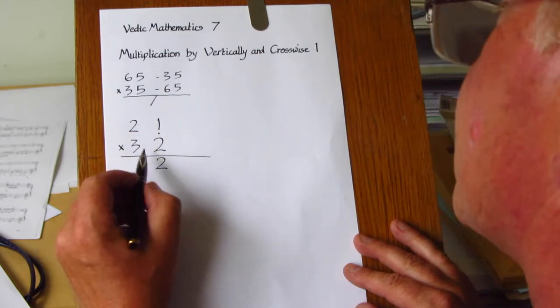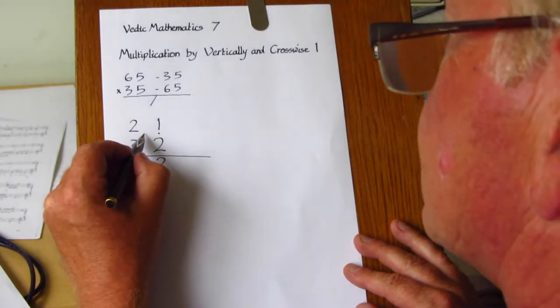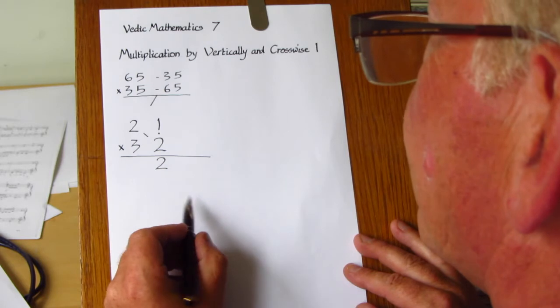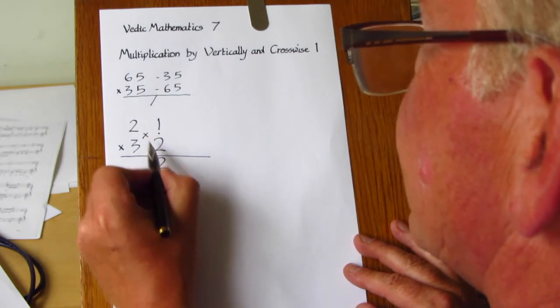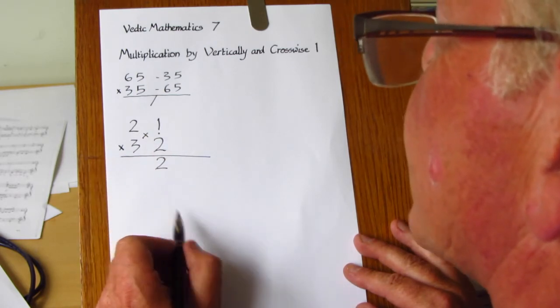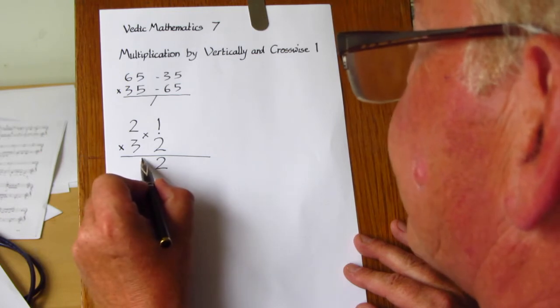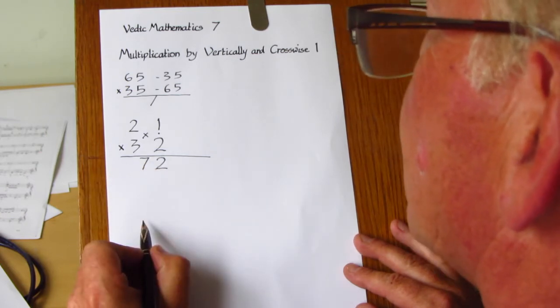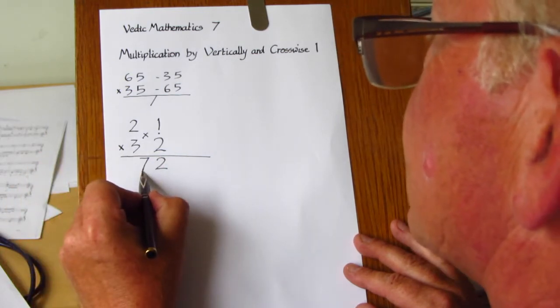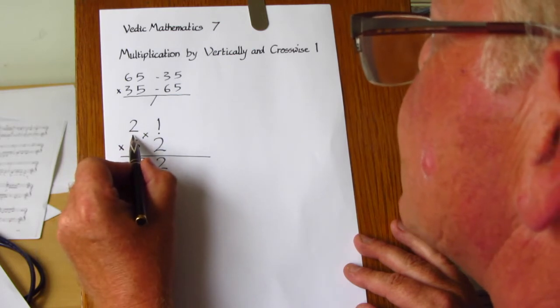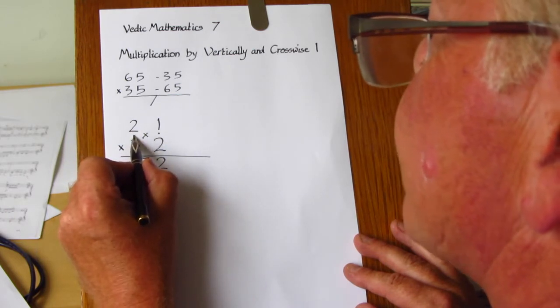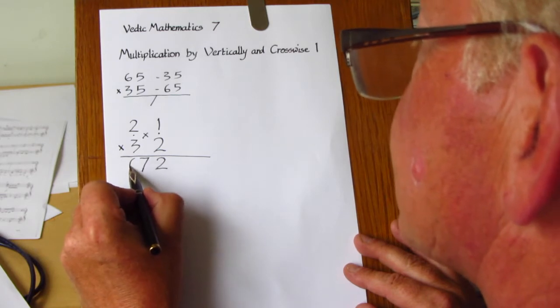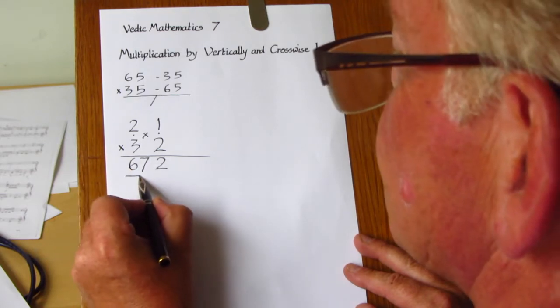The second step is to multiply crosswise. 2 by 2 is 4 and 1 by 3 is 3, and then add those two products together, 4 add 3 is 7. And then the last step is to multiply together the two tens, 2 times 3 gives 6, so it is 672.